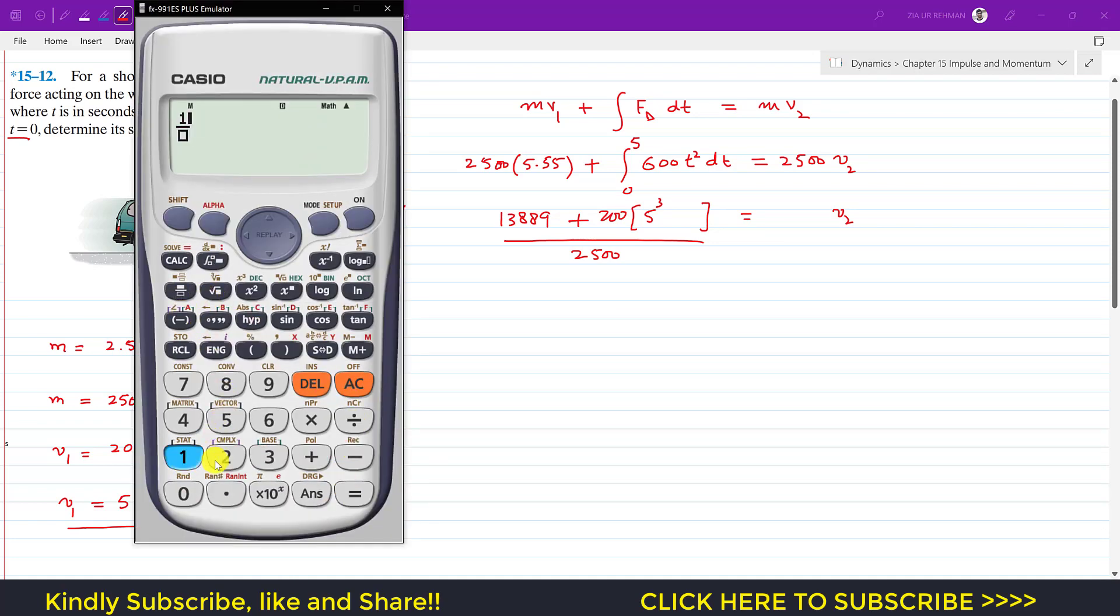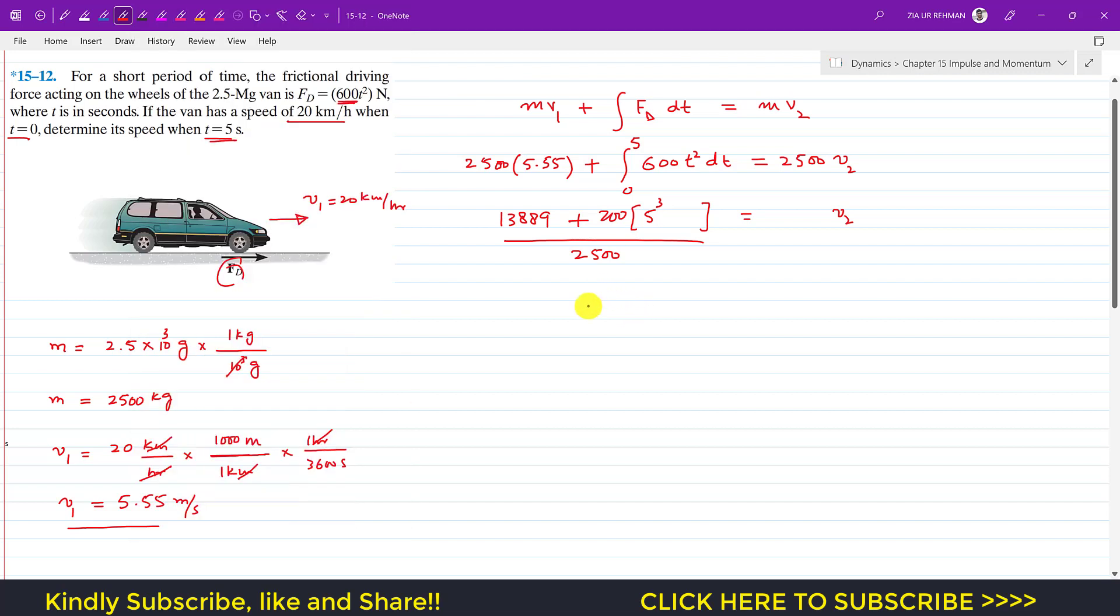So this is 13,889 plus 200 times 5³ divided by 2500. So this is 15.56. So velocity v₂ is 15.56 meters per second.